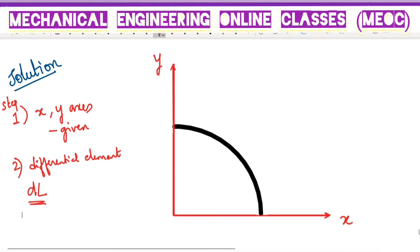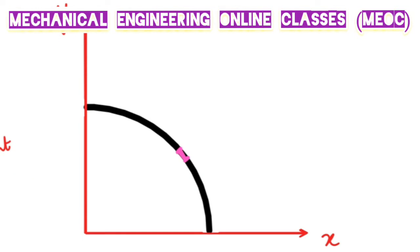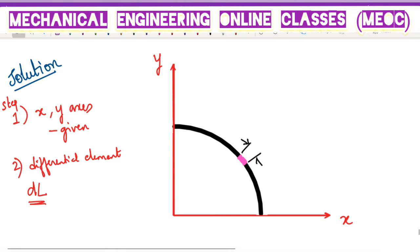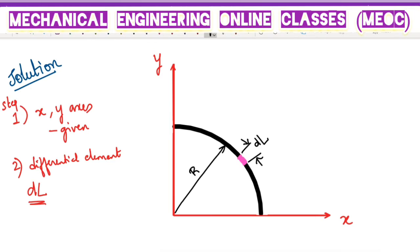Let us assume some differential element here. I am assuming this pink zone as our differential element DL — so this length is DL, this arc length. Let us assume that the radius of this circular arc is R, so we can write DL in terms of R. Let us assume that our DL is subtending an angle of dθ from its center O. So DL, the arc length, can be given as radius into the angle subtended: DL = R·dθ.